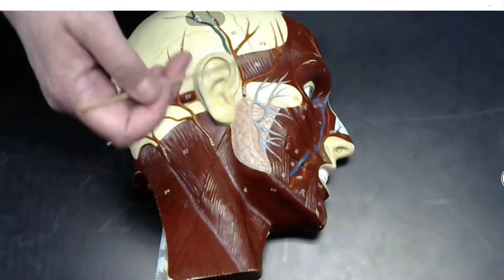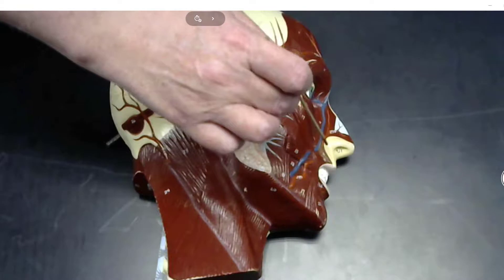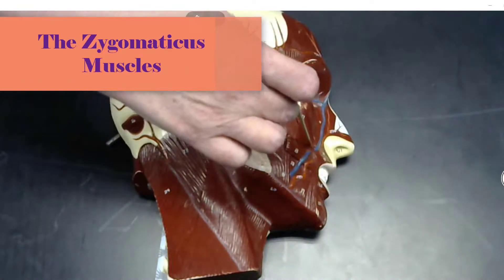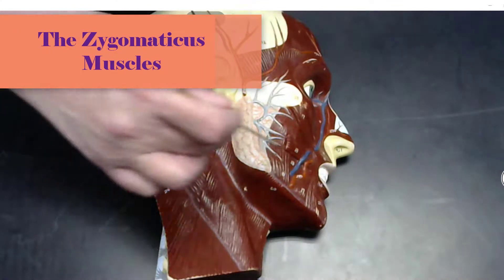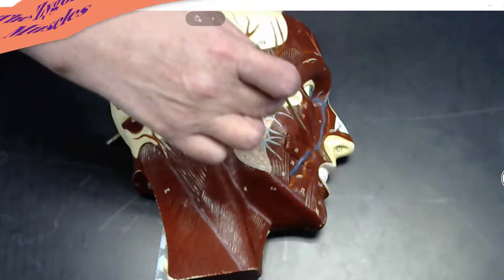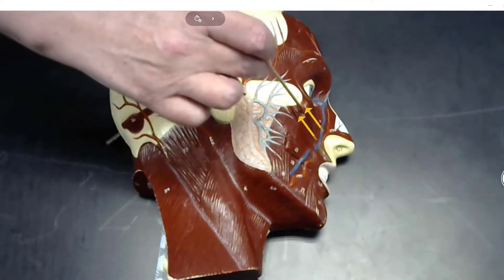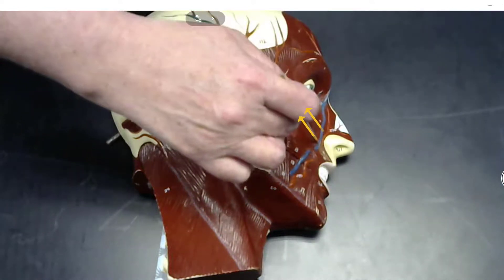The muscles that allow you to smile are the major and minor zygomaticus muscles, which attach to the zygomatic bone or the zygoma.